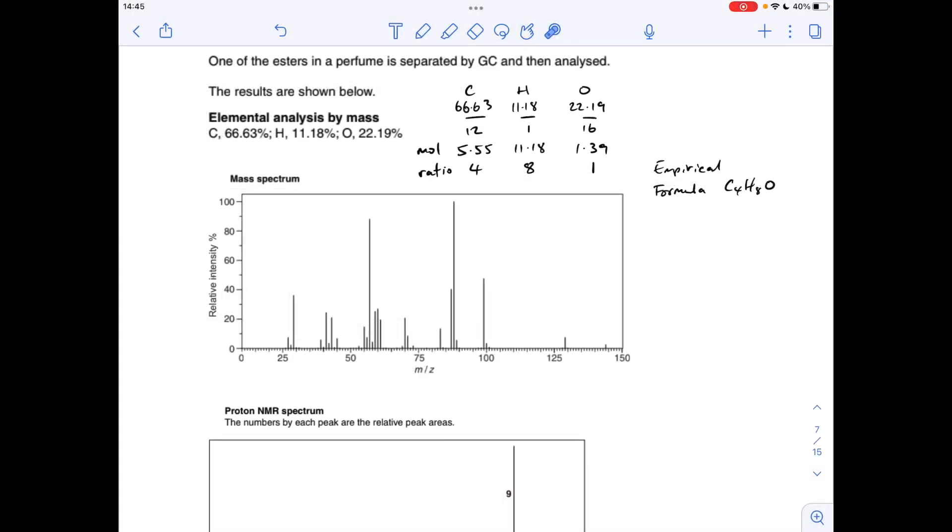Okay, so we'll make a start. You can see I've already processed this elemental analysis by mass information, so the whole point of that is to get the empirical formula for the compound. Percentage divided by relative atomic mass gives us the moles. We divide by the smallest and we get the simplest whole number ratio, so it was 4 to 8 to 1. So the empirical formula for the ester is C4H8O.